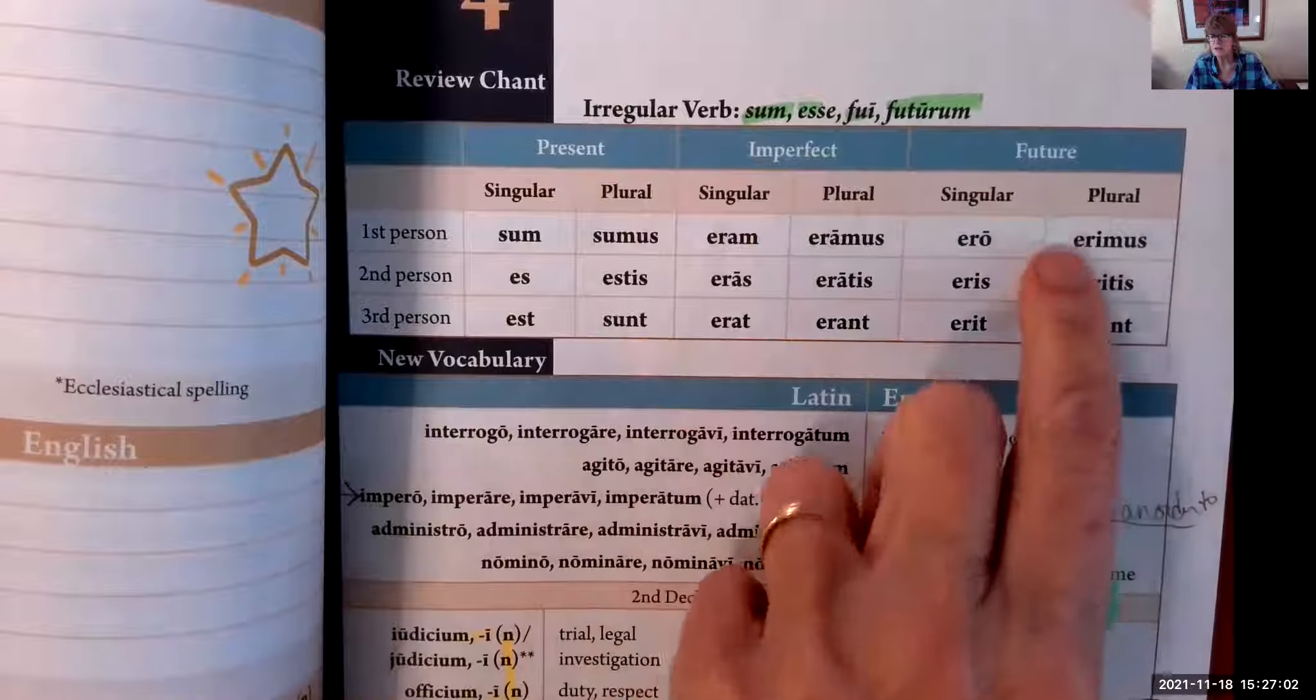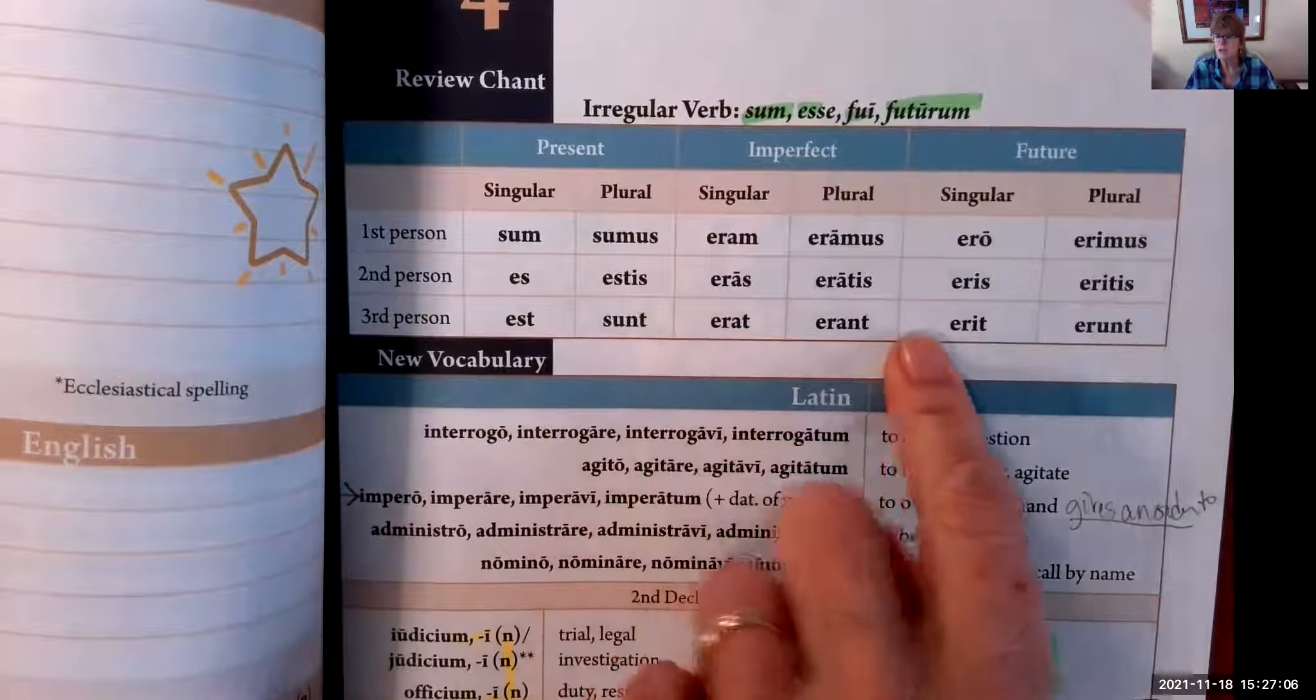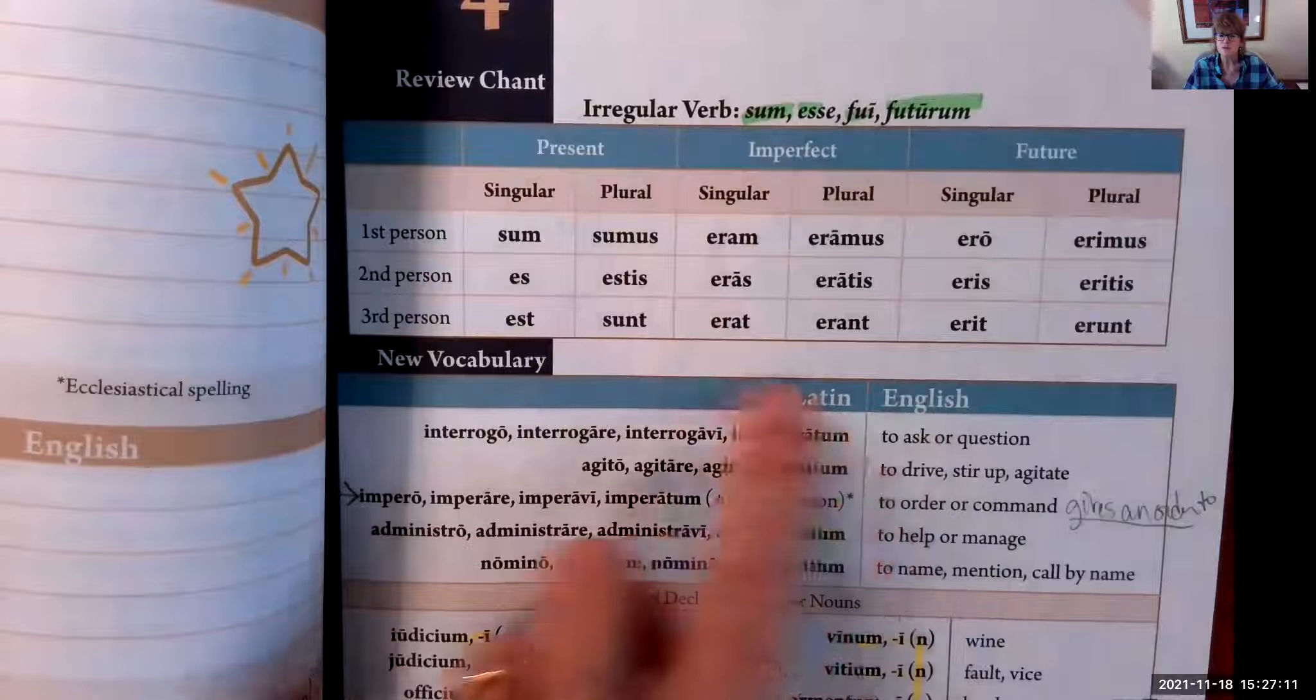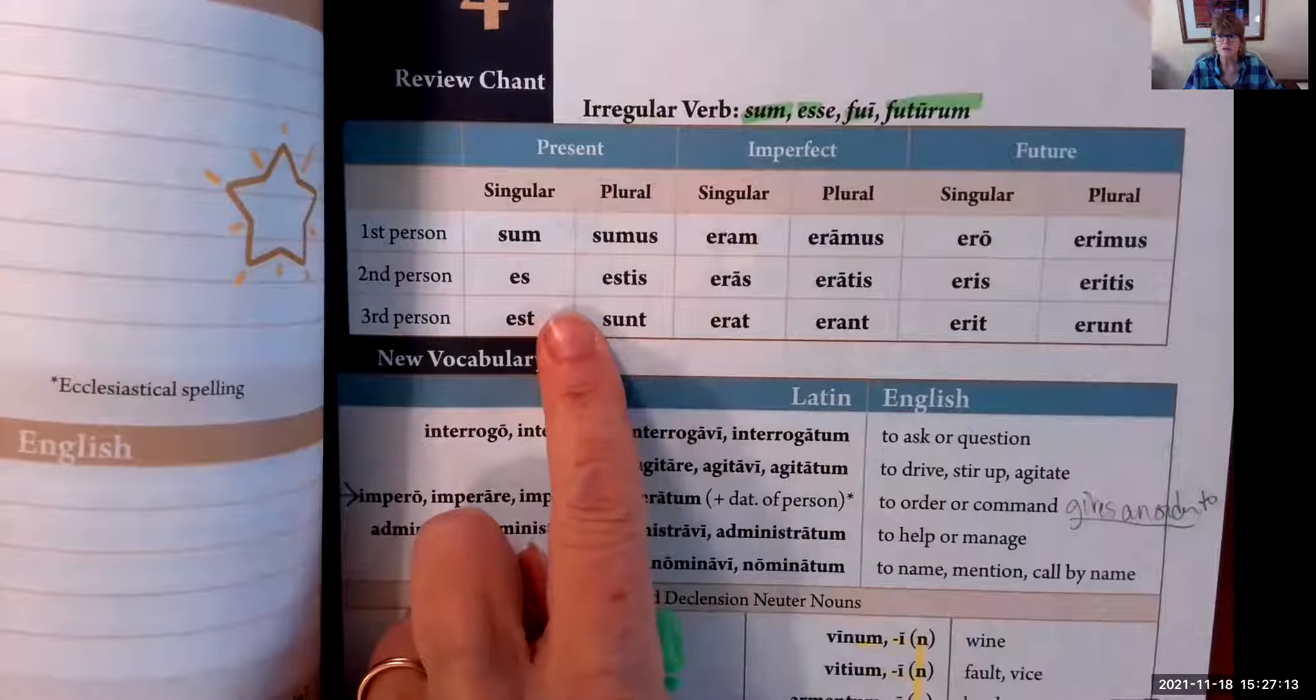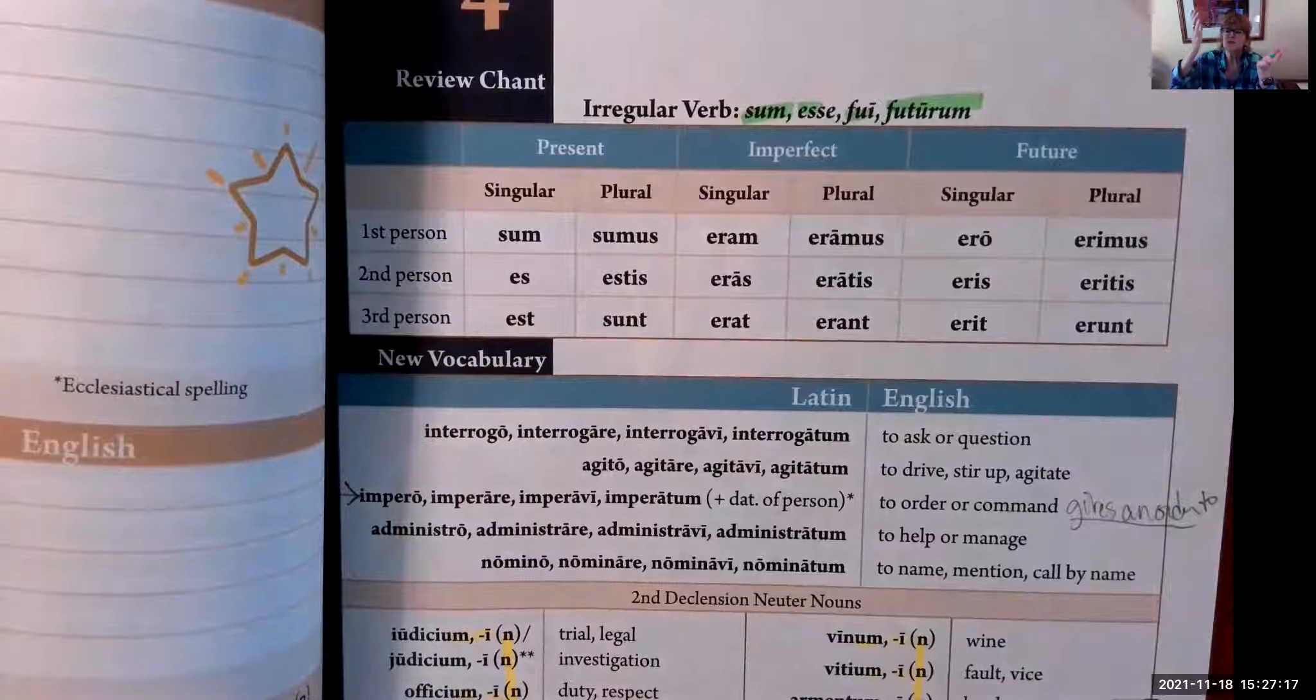Ero, eris, erit, erimus, eritis, erunt. I shall be, you will be, he/she/it will be, we shall be, you all will be, they will be. These verbs we use typically with Pattern 4 in Shirley Grammar—it's the linking verb.